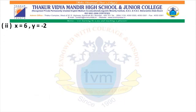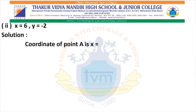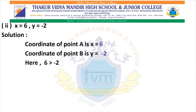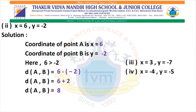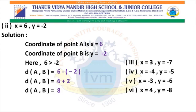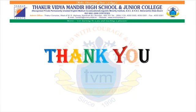Now, the next part: X equals 6 and Y equals minus 2. The coordinate of A is X, which is 6. The coordinate of B is Y, which is minus 2. 6 is greater than minus 2. So, distance AB equals greater coordinate minus smaller coordinate, that is 6 minus (minus 2). Solve the bracket first: minus into minus is plus. So, distance AB equals 6 plus 2. Distance AB equals 8. Similarly, you can solve question numbers 3, 4, 5, and 6. Thank you very much.